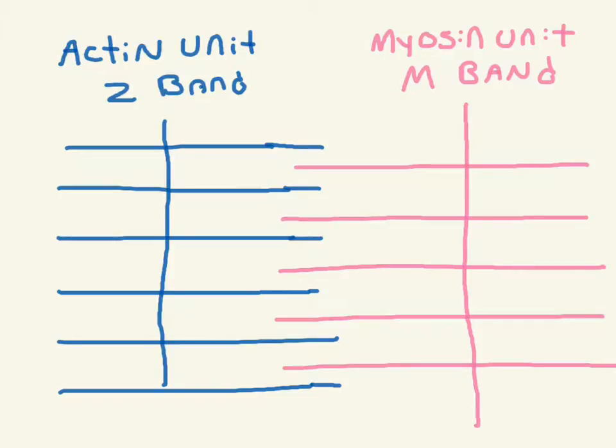So we're inside the myofibril and I drew this out just so it's easier to understand. We have two sets of bands: the Z-band and the M-band. If we look on our left, we see the actin unit and on the right is the myosin unit. And these are inside the myofibril and they lay right along each other. In their resting position, they kind of overlap. And our goal is to get these to bind with each other in a power stroke in order to create a contraction.